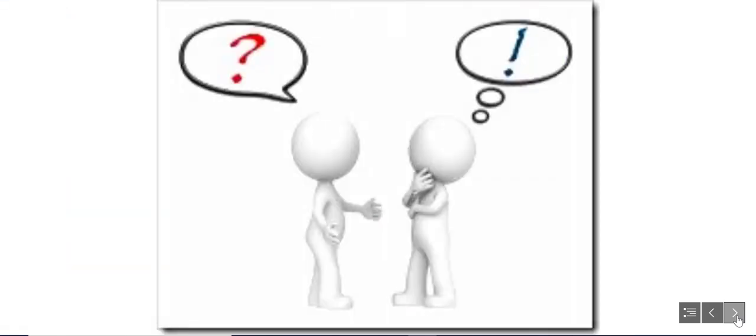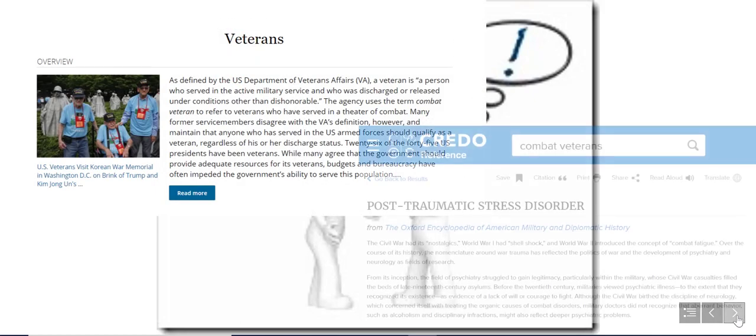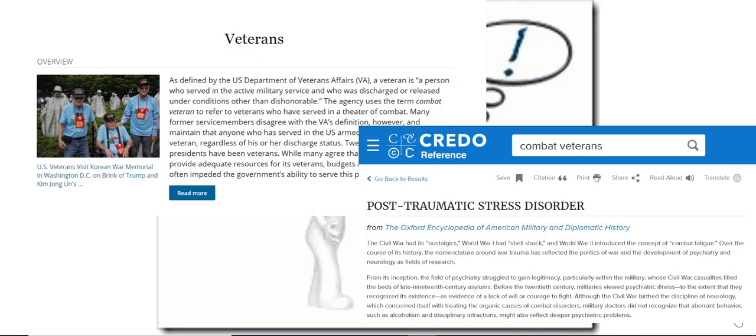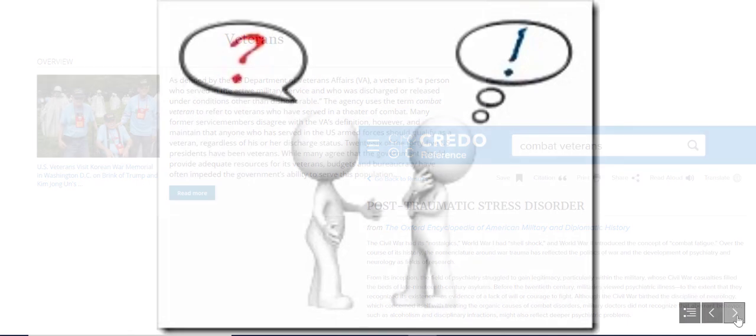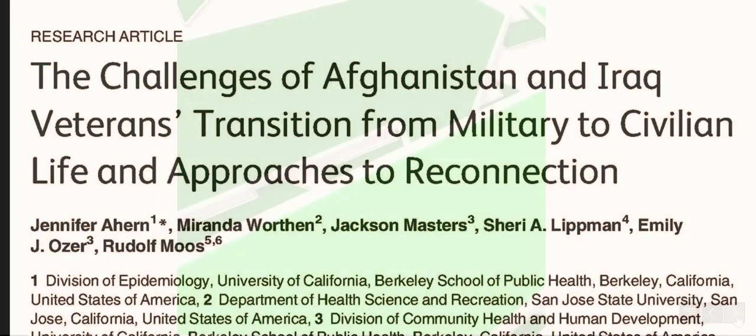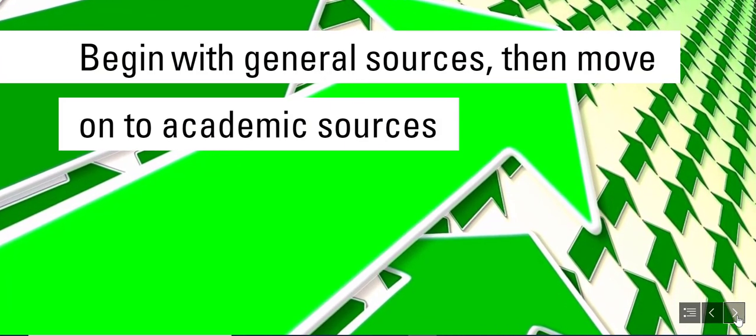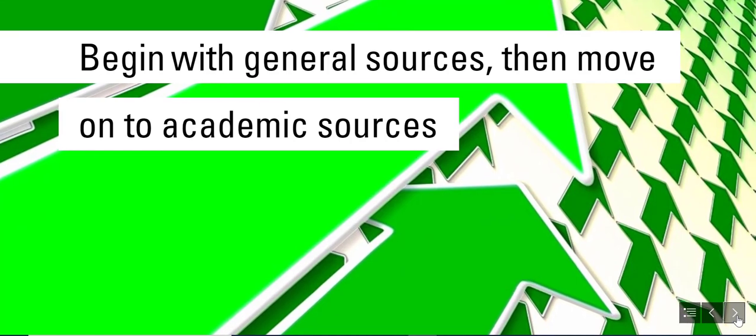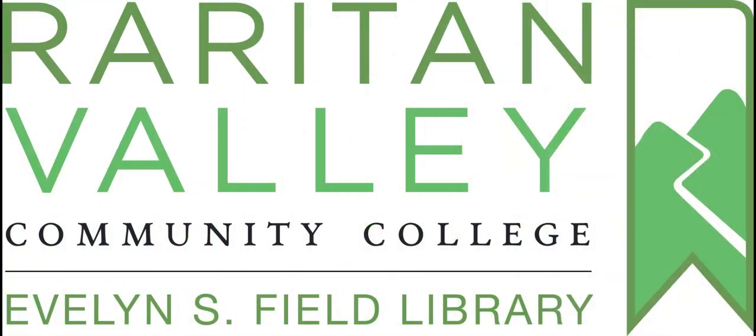Scholarly articles are an established method of communication between experts or scholars in a particular field of study. For this reason, students may need to educate themselves with general sources and background information first in order to fully understand the implications and importance of the scholarly articles on your topic. A good strategy for approaching your research is to start with general sources that will help you understand your topic and begin to develop an answer to your research question. Then move on to the more academic sources that dive into the details, theories, and research that will help support your thesis.